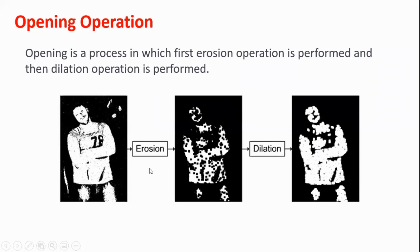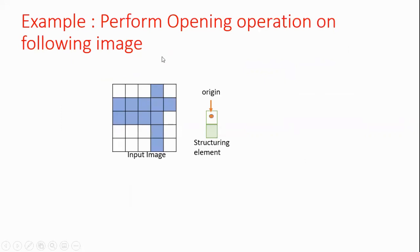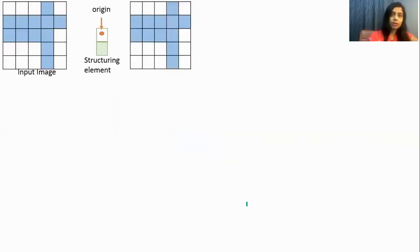You can see here an example. First erosion is performed and then dilation is performed. So let's solve an example: perform opening operation on the following image. This input image is given and the structuring element is also specified. In this structuring element, this is the origin pixel. To perform opening operation on this image, first we will do erosion and then dilation.